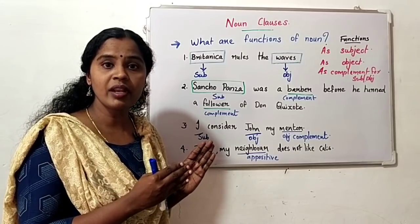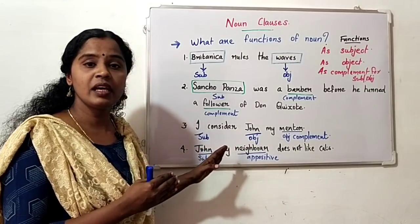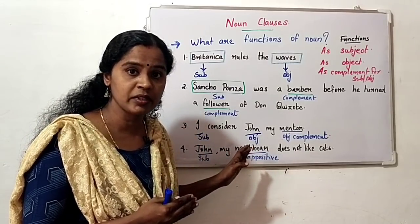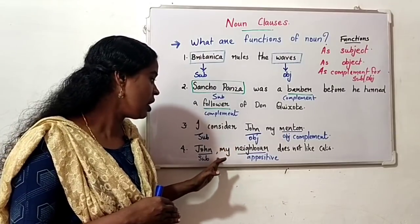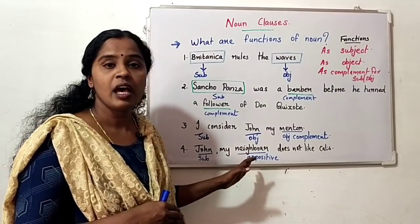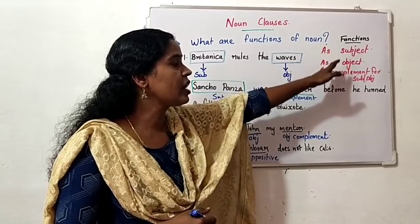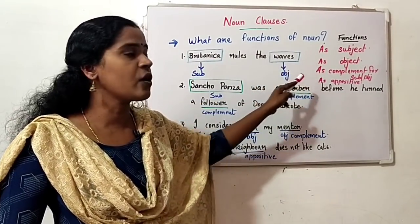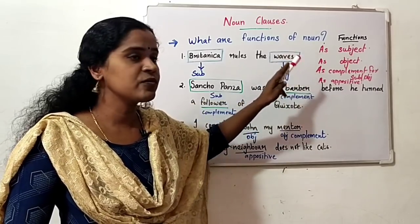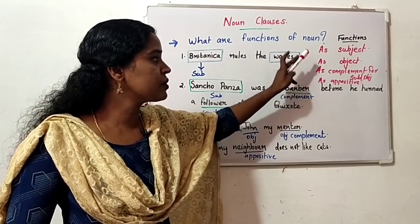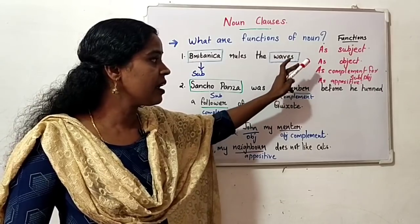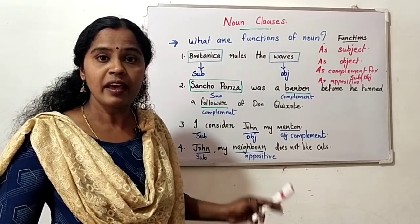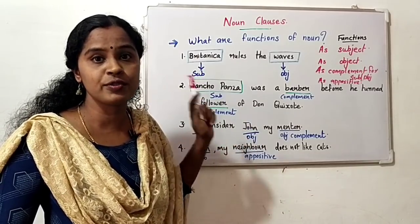We studied in appositive phrase that appositives are interrupting definitions about a noun. So here, noun can act as appositive — that is the next function of noun. These are the four functions of a noun: as subject, as object, as complement for subject or object, and as appositive.